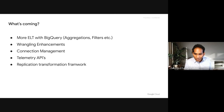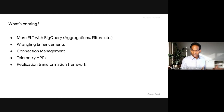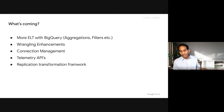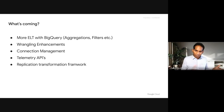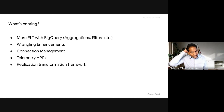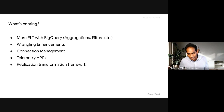Finally, we are adding a replication transformation framework. Today we can do replication using change data capture, and you can also use Google's own technology called Datastream, but we don't allow you to transform the data during replication. We are going to add a framework where customers can build their own custom transformations and we will also add some built-in minor transformations to enhance the transformation capability when moving data in real time. These are the big investments we are making for the first half of next year, and we'll share more at a Q1 meetup.